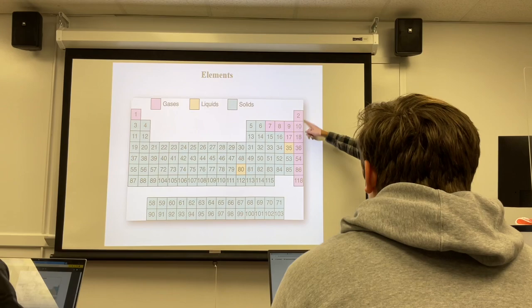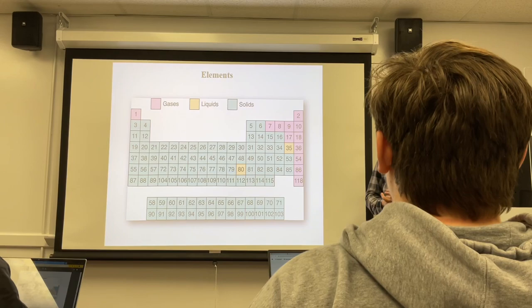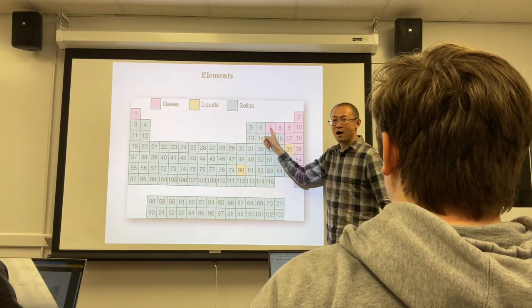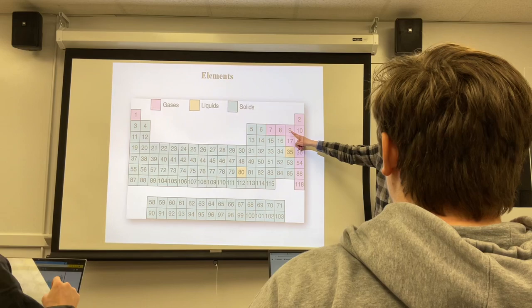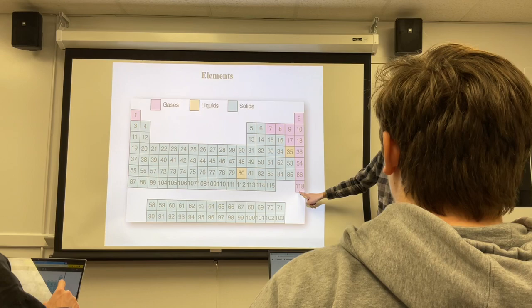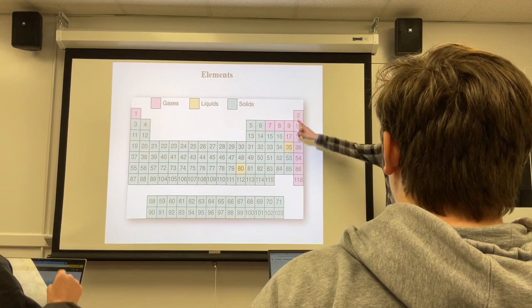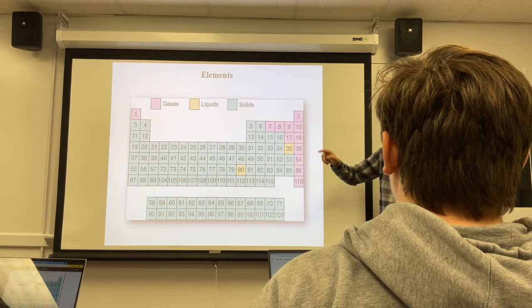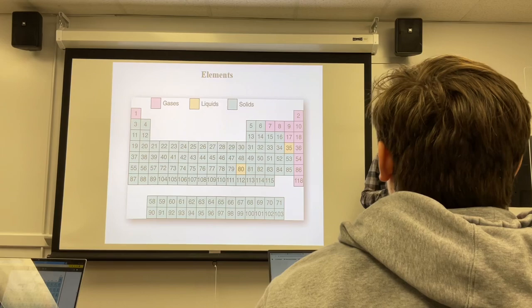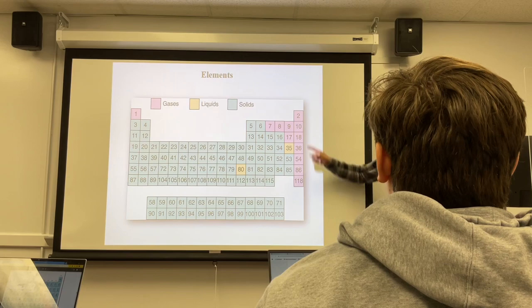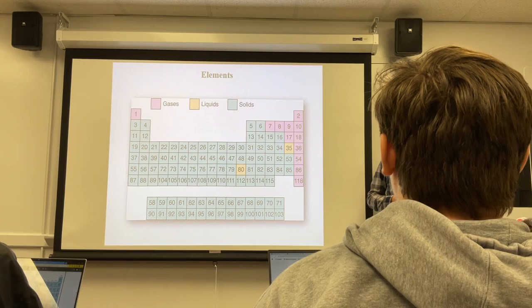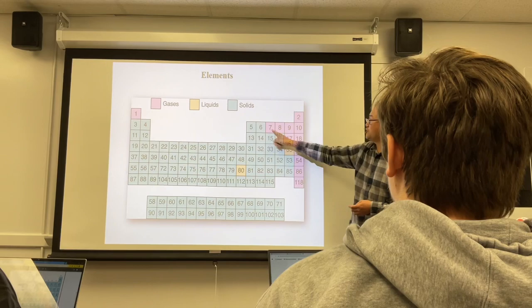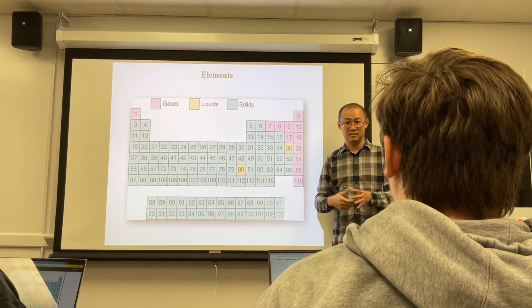The gas elements are: hydrogen, nitrogen, oxygen, fluorine, chlorine, and the whole Group 8A — which we call noble gases. Argon is one of them. Noble gas plus hydrogen, nitrogen, oxygen, fluorine, and chlorine — those are the gas elements. After memorizing liquids and gases, the rest are all solids.